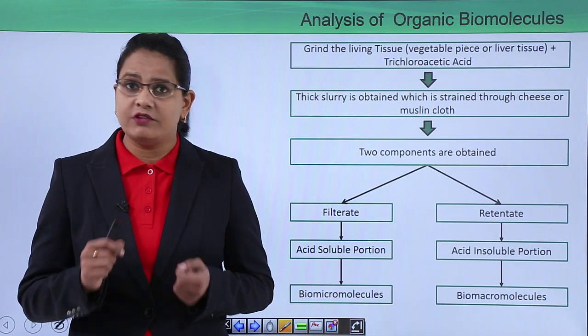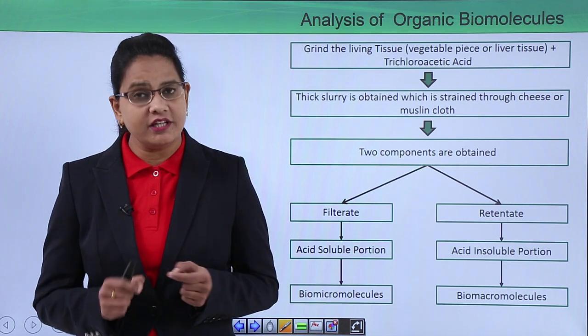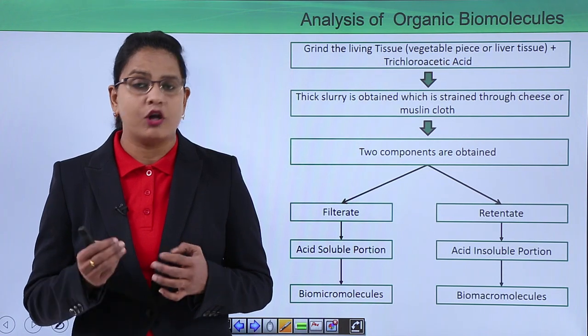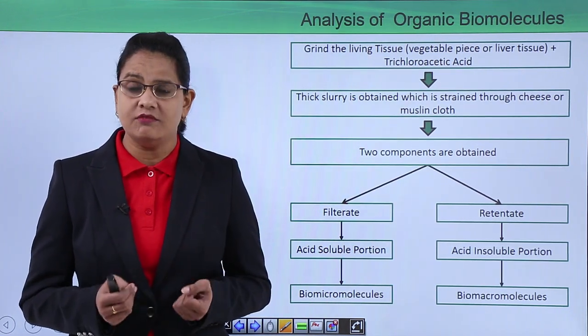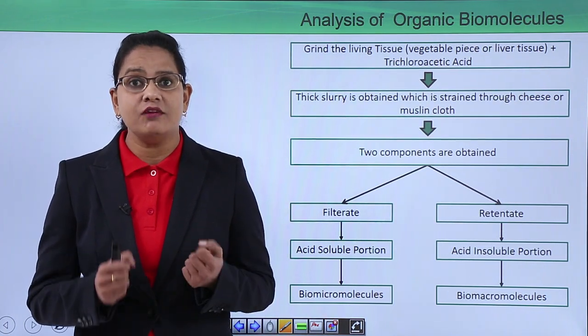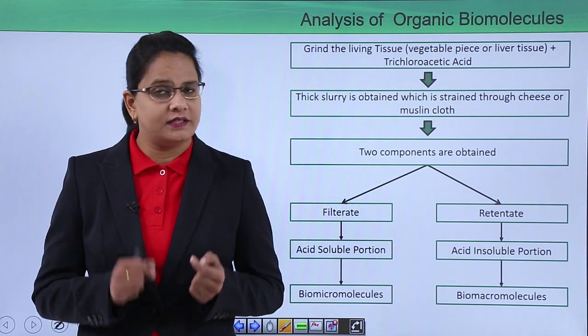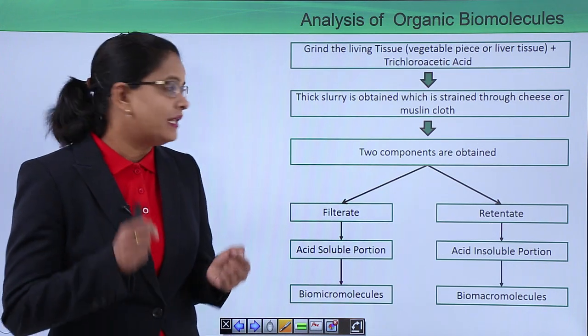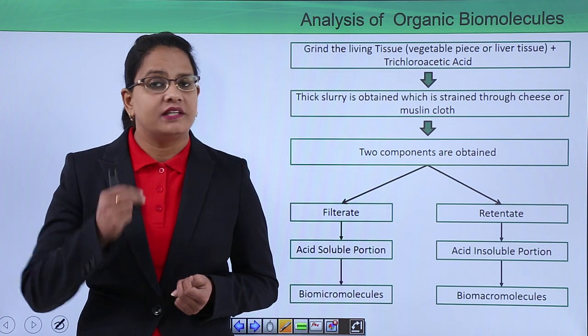For analysis of organic molecules, we take a living tissue. This can be a plant tissue or an animal tissue like liver tissue or a vegetable piece. We grind it in a mortar and pestle with trichloroacetic acid until we obtain a thick slurry. After obtaining the thick slurry, we pass it through a muslin cloth or cheese cloth. Then we obtain two components after filtration.